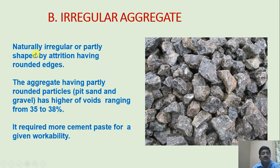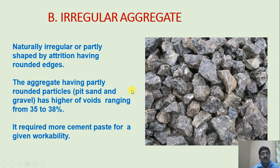Irregular aggregate: naturally irregular or partly shaped by attrition having rounded edges. Aggregates with partly rounded particles, such as pit sand and gravel, have higher voids ranging from 35 to 38% and require more cement paste for a given workability. Workability is the ease by which concrete can be mixed and placed in the required format.